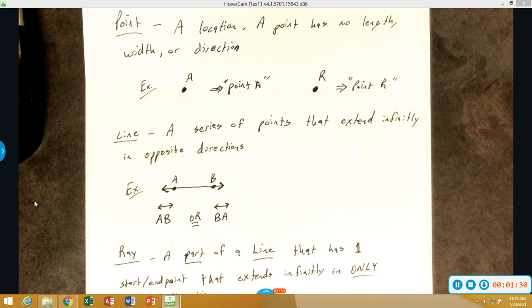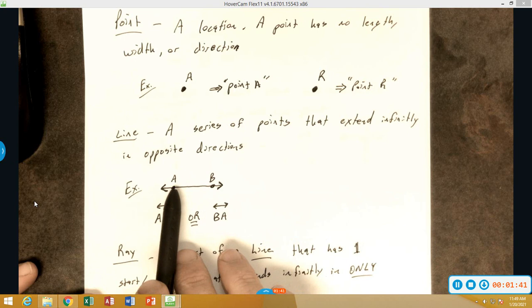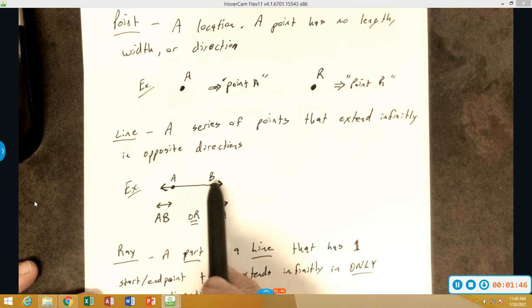Next one is a line. A line is a series of points that extend infinitely in opposite directions. An example is this right here. Notice that there are only two points here, but we can actually see that there are infinitely many points in between these two.